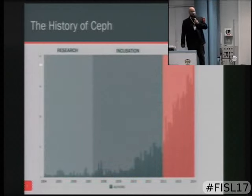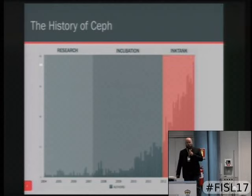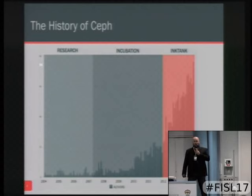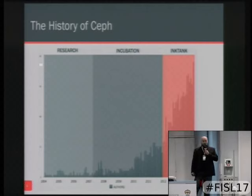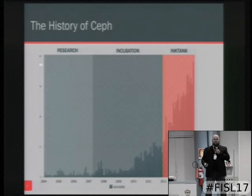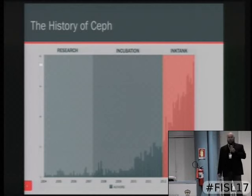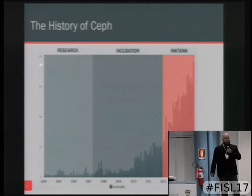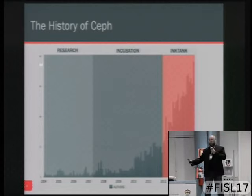A little bit about the history of Ceph. The first commit was done in 2004, so we have been around for a while. It was originally written as part of a Department of Energy grant — we call them the tri-labs: Lawrence Livermore, Ornel, and Sandia. The national laboratories in the United States got together and asked Sage, our founder, to write a system with the ability to do horizontally scalable metadata. That's where Ceph started, as a distributed file system.